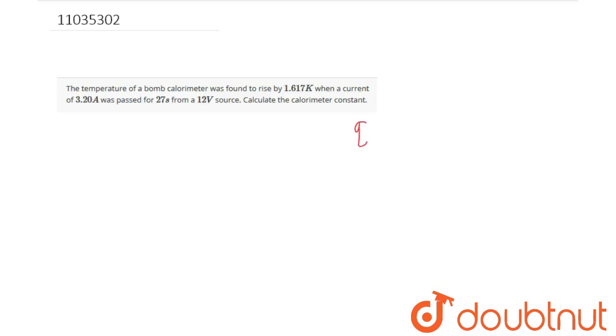We know that Q equals ms delta T. According to the question, delta T is given as 1.617 Kelvin. We have to calculate Q.